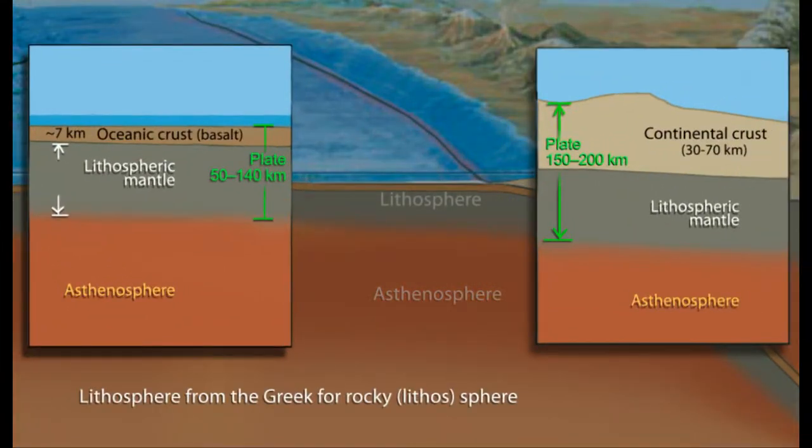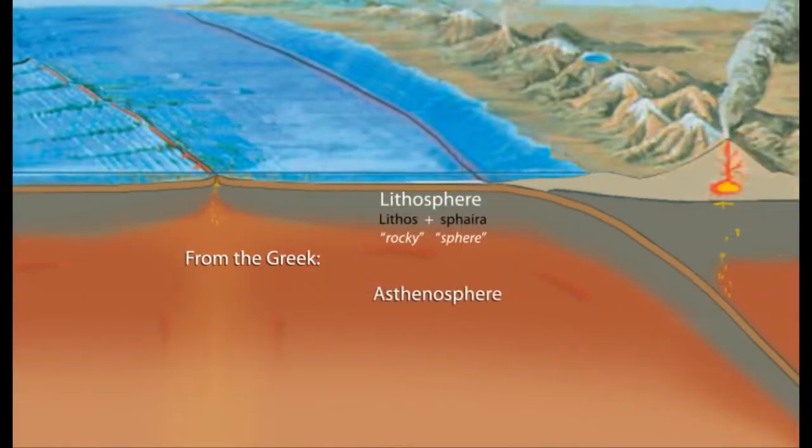Remember that lithospheric plates, also called tectonic plates, have a layer of crust on top of lithospheric mantle, the outermost rigid part of the mantle. These move as a single unit. The hotter asthenosphere beneath the plates is solid but less rigid mantle rock that can slowly flow.